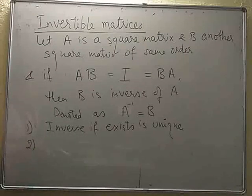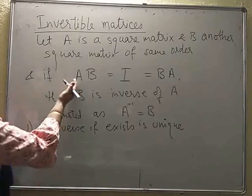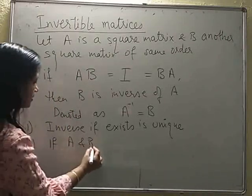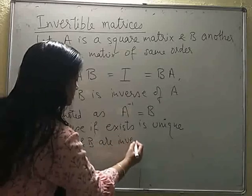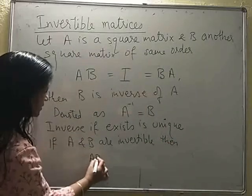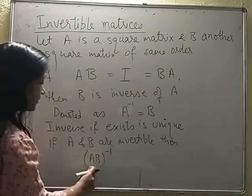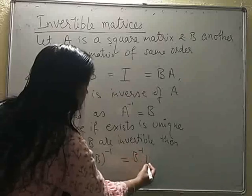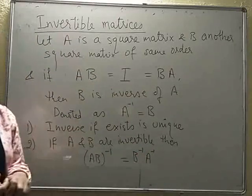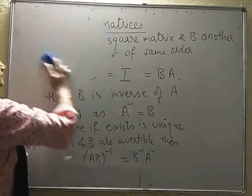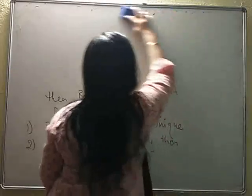The second result says: if A and B are both invertible, then (AB)⁻¹ — meaning we multiply A and B and then take the inverse — is equal to B⁻¹A⁻¹. Note that the order is reversed. We can verify this result.